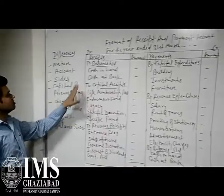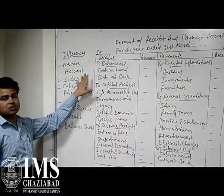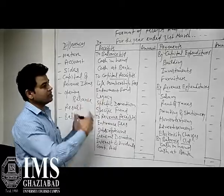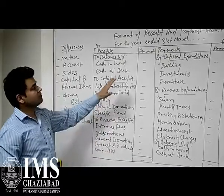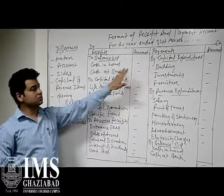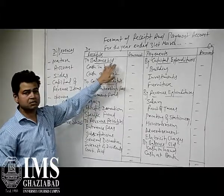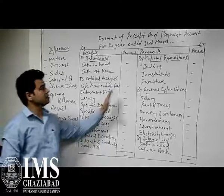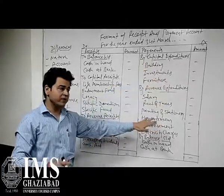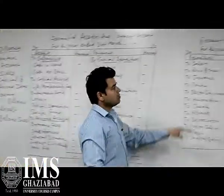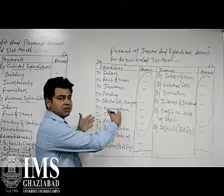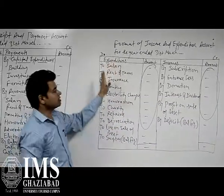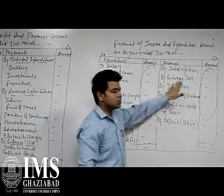The next point of difference is the sides of the account. Both formats have two sides — debit and credit. In the Receipts and Payment Account, the debit side represents receipts and the credit side represents all payments. Whereas in the Income and Expenditure Account, the debit side represents all expenditures and the credit side represents all income.